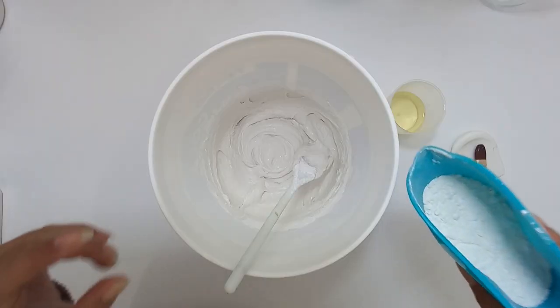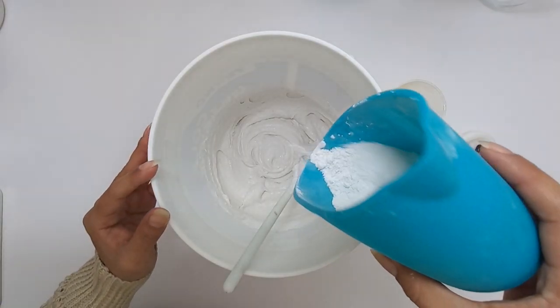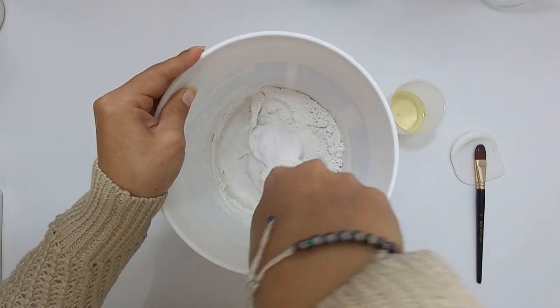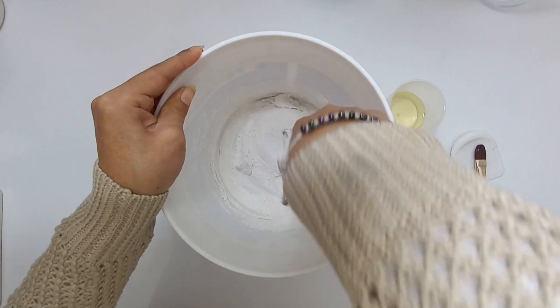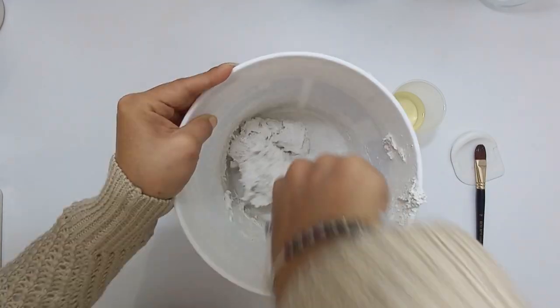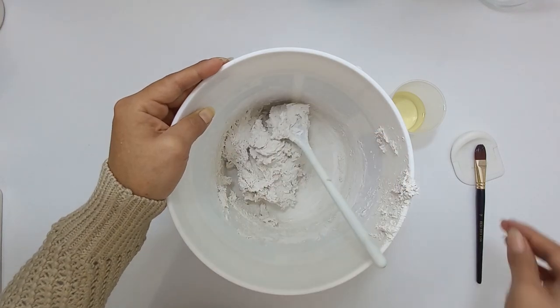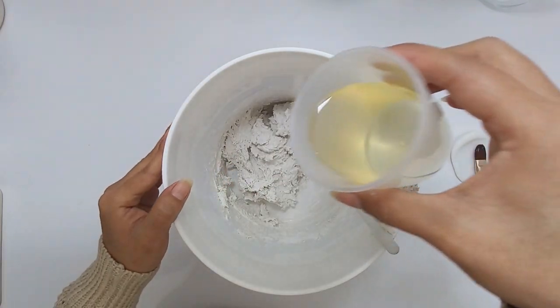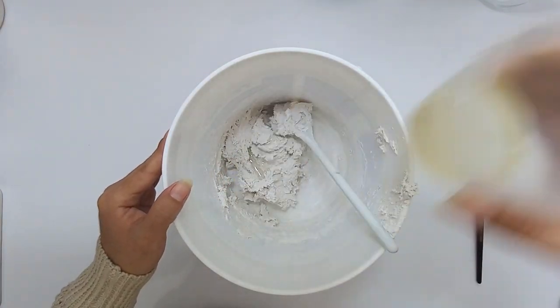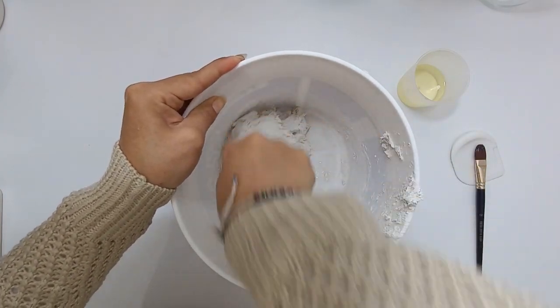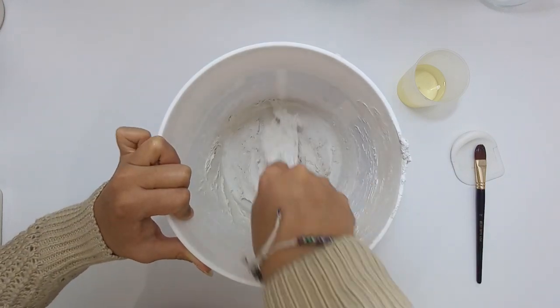We're gonna add what was left of the chalk powder and we're gonna stir until it's fully integrated into it. We're gonna add a bit of oil and integrate it into the mixture.